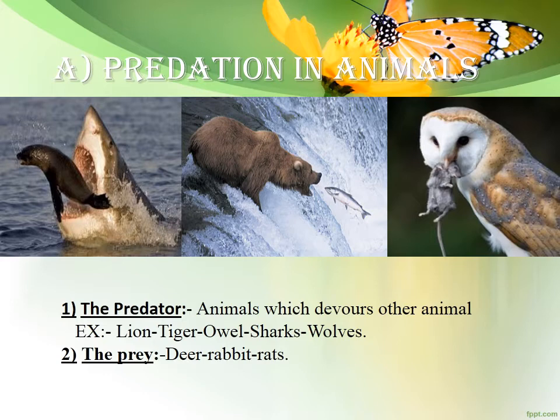Predation in animals must be between two: predator and prey. The animal which devours another animal is called the predator, while the devoured animal is called the prey.